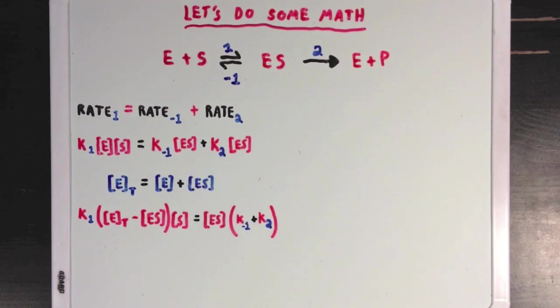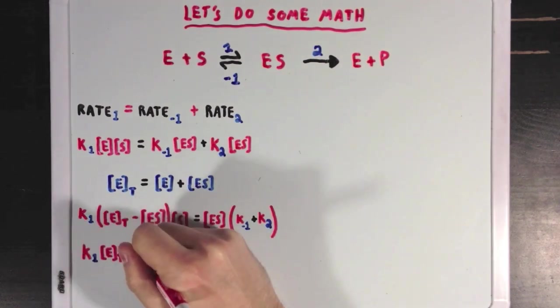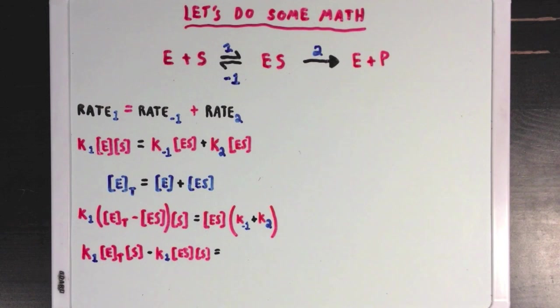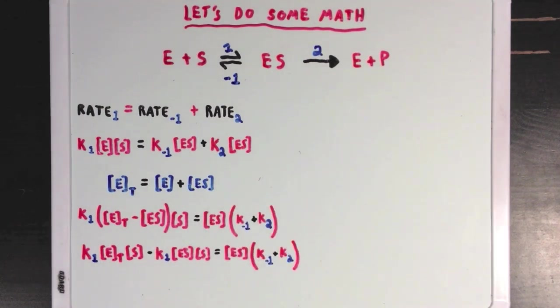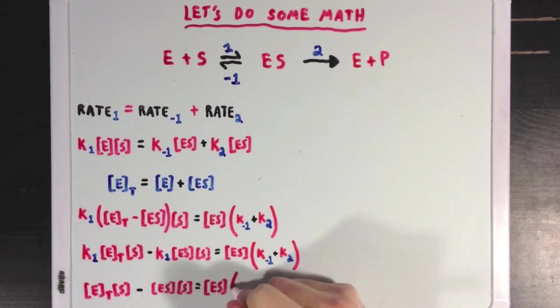On the right side of the equation, I've just factored out the common term ES. Next, I'm just going to expand the left side of the equation, so take a moment to look at that. And now what I'm going to do is I'm going to divide both sides of the equation by K1. So K1 will disappear on our left side, and on our right side I've put K1 in with all the other rate constants.